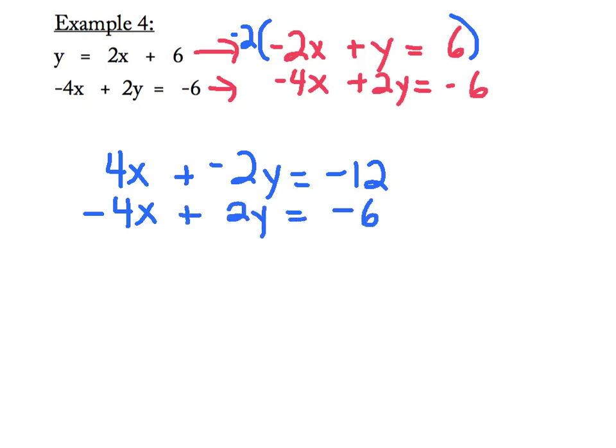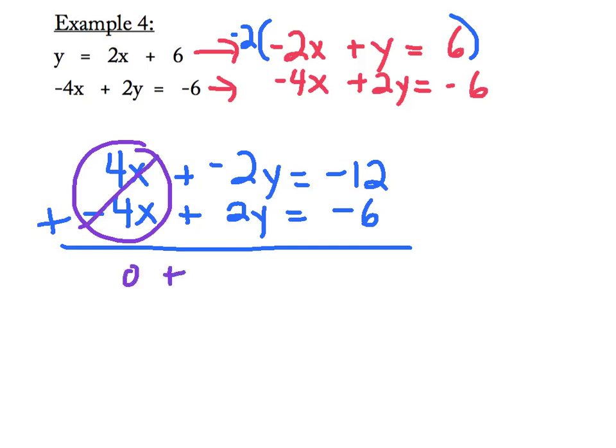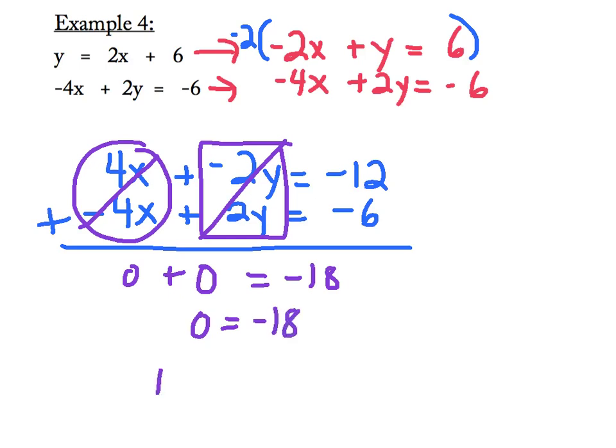I'm going to go ahead and add up my columns. Now, my x's are opposites, so they're going to cancel each other out. My y's, however, are also opposites, which means they will also cancel each other out. Negative 12 plus negative 6 is going to give me negative 18. That means I get 0 is equal to negative 18, and we all know what that means, right? No solution.